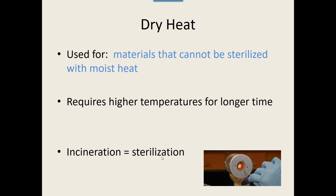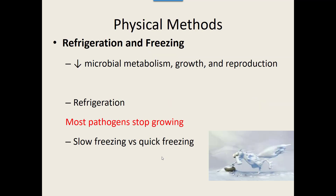Opposite of heat, refrigeration and freezing: lowering temperature decreases metabolism because all chemical reactions are slower, resulting in slower growth and reproduction. This is what we do when we pull plates out of incubators and put them in refrigerators — we're slowing them down. In a refrigerator, most pathogens stop growing. However, there are still some organisms that can grow in a refrigerator — we've all pulled something out of the back of the refrigerator after a few months with stuff growing all over it.